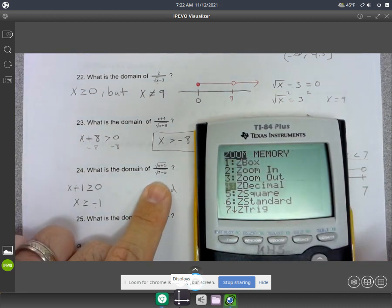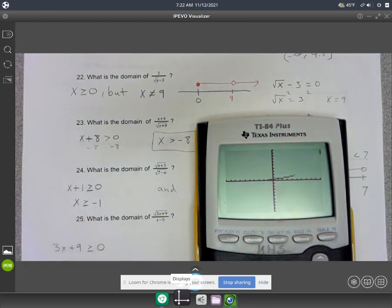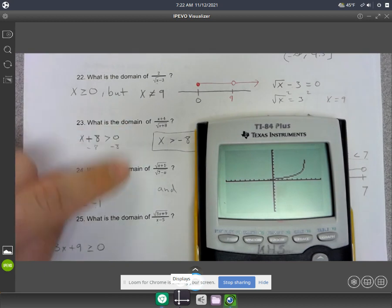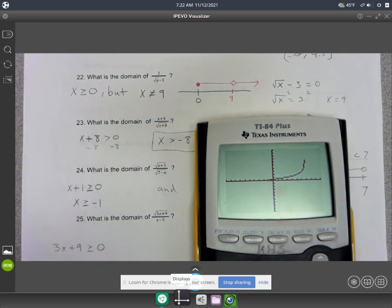It's a lot easier to see this on Desmos, especially whenever you've got these rational functions. They can get really ugly looking sometimes.